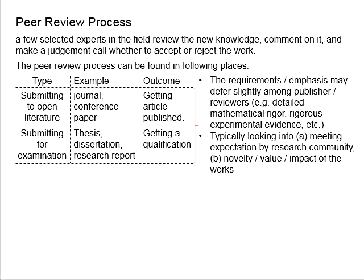In the previous videos we mentioned about the peer review process. When you submit your manuscript to a journal, the editorial board will send your manuscript to several reviewers who are known to be experts in the field, in order to review your papers, give comments on it, and make a judgment call whether to accept or to reject the work. Normally the entire peer review process is done in the manner of double blind — that means the reviewer does not know who is the author and the author does not know who is the reviewer. The editorial board will facilitate this entire process so that it is conducted professionally and without bias.